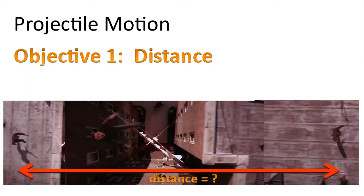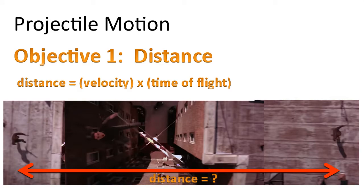And so here's objective one. To determine the distance that Spider-Man has jumped. Well in this case because we're assuming there are no forces in the X direction then we can use this simple formula for distance: velocity multiplied by the time of flight.